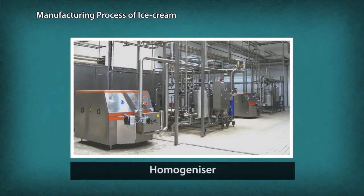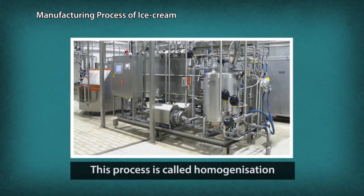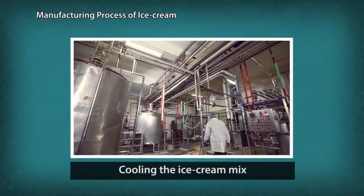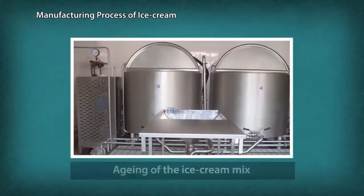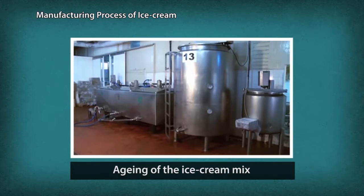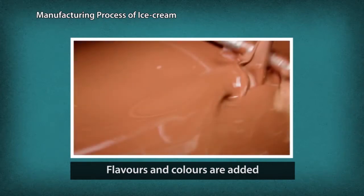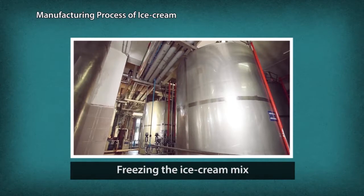This premix then passes through a homogenizer where the fats are further broken down into small globules, which smoothens the mixture. This process is called homogenization. This premix then passes through heat exchangers for cooling and is then chilled to 2 degrees centigrade and left to thicken. This becomes the base mixture. This mixture is then aged in insulated storage tanks for at least 6 to 8 hours at 4 to 6 degrees centigrade. For further processing, flavors and colors are added and it is passed through the dynamic freezing process where the temperature is minus 4 to minus 5 degrees centigrade.